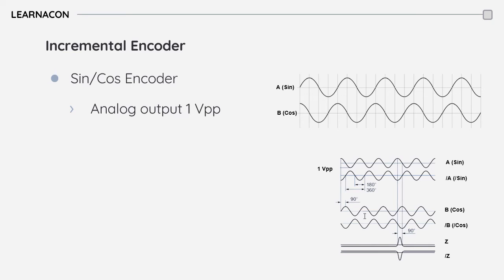The use of sinusoidal analog outputs in sine encoders allows for significantly higher resolution than incremental encoders can achieve. This high resolution is beneficial for applications such as servo motors, where it leads to smoother, quieter, and stiffer motion. The high resolution also improves velocity control and repeatability, and reduces noise in the position loop.